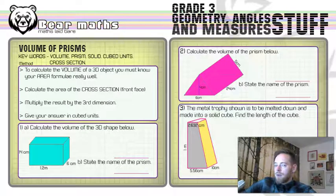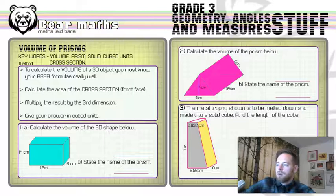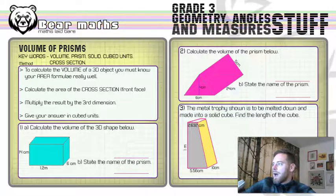First step, once you know your area formula really well, is to calculate the area of the cross-section. That's the front face of the shape. Then, you multiply the result by the third dimension, or the appropriate third dimension. There could be a few more on there that might throw you off. You might need to figure out which ones you actually need to use. And then, you need to give your answer in cubed units.